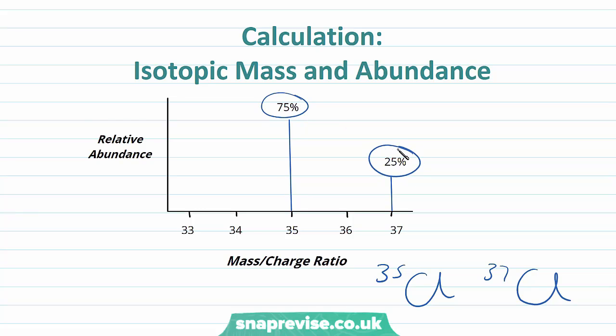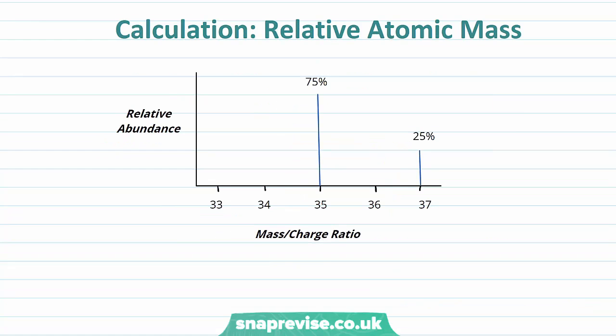Now in this mass spectrum here, we're actually given the percentages over here. We're given the percentage relative abundance, so it's quite easy to read off. The relative abundance of chlorine-35 is 75 percent and that of chlorine-37 is 25 percent.